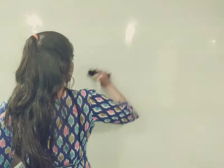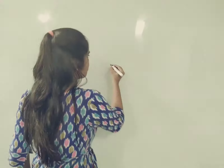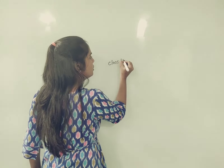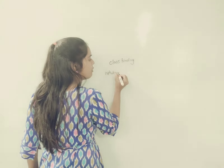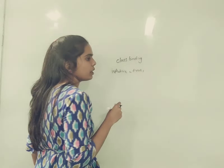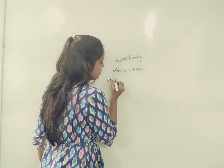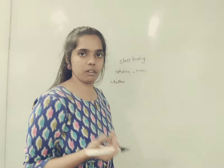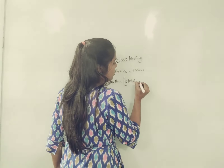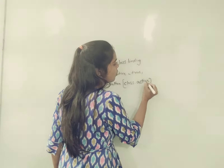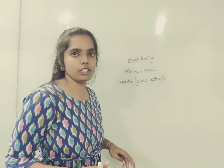The next one is class binding. You have to declare a variable — for example, isActive equal to 2. Coming to the code example, you are using a button. You need to know when the button is active and when it is not. You have to use [class.active] = "isActive". This is class binding — you are giving it to a button so that you can achieve class binding on your element.